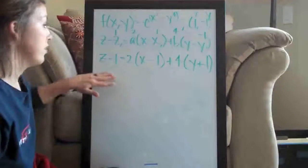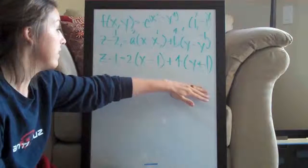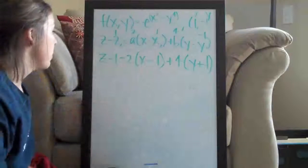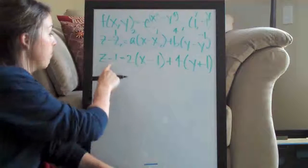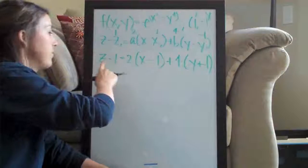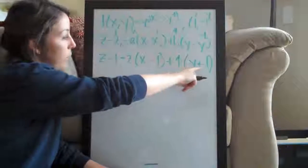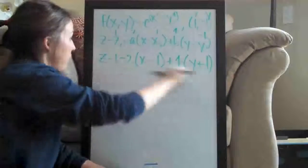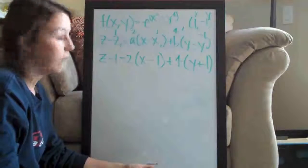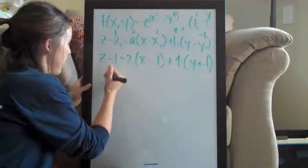So you could leave this equation exactly as it is and it would be completely sufficient. You could also move this 1 over and you'd have z equals 2 times x minus 1 plus 4 times y plus 1 plus 1. It's also written in that form. A lot of people like to do it this way. Simplify.